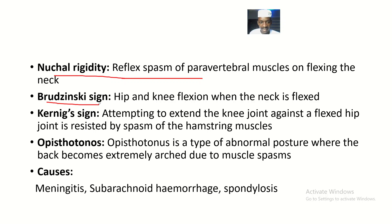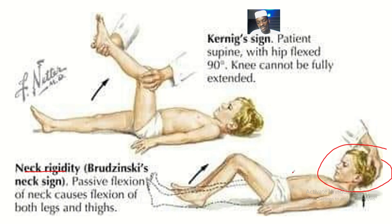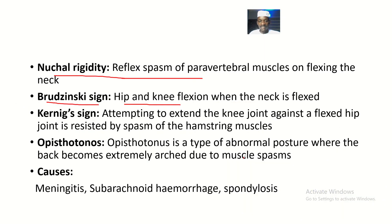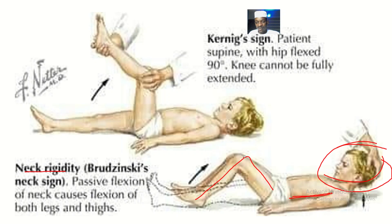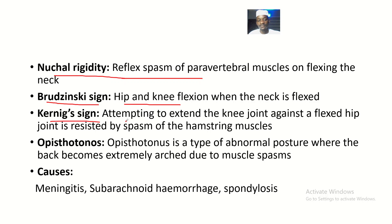For Brudzinski's sign, you look for hip and knee flexion when the neck is flexed. So while in nuchal rigidity you are checking for spasm of the vertebral muscles, in Brudzinski's sign you are still raising the person's head but checking whether the person's hip and knee rise as well. If there is flexion of the hip and knee when you flex the neck, Brudzinski's sign is positive.